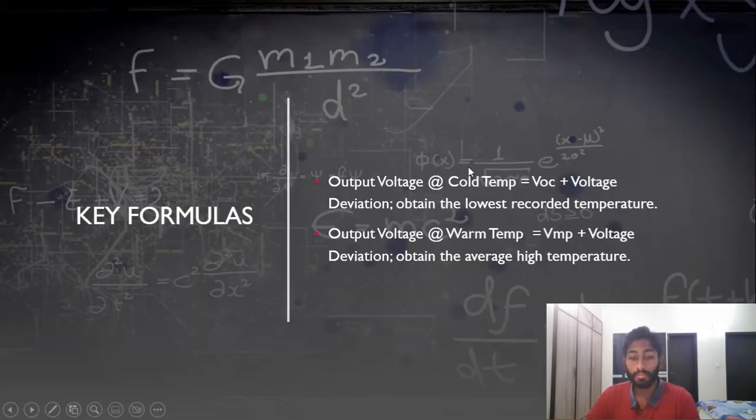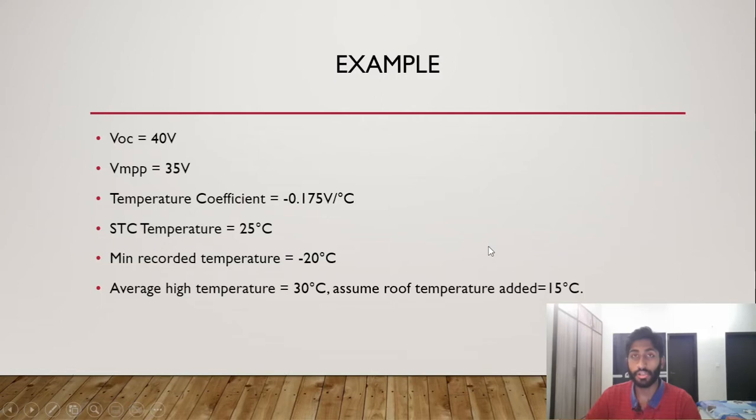Some of the key formulas with regards to the temperature being changed throughout the seasons, for example summer and winter seasons. To calculate the output voltage at the cold temperature or cold climates, you have to add the Voc of the solar module with the voltage deviation, the voltage change that fluctuated, and you have to make sure you have the obtained value of the lowest recorded temperature climate in your location. For the output voltage at warm temperature, you need to make sure you add the Vmp, the maximum power point voltage, with the voltage deviation, and just to make sure that you do record the average high temperature in your location. So I'll give an example.